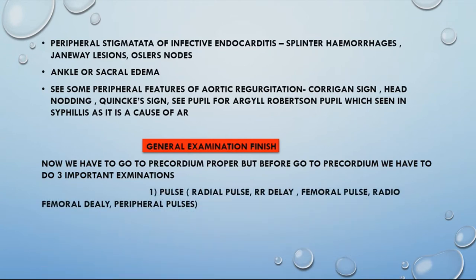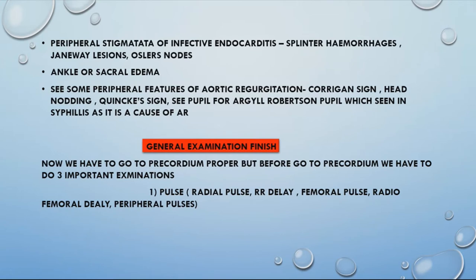The first important examination is the pulse. Check the radial pulse and comment on rate, rhythm, and character. Then check for radio-radial delay by palpating both radial pulses together. Next, check the femoral pulse and assess for radio-femoral delay by palpating radial and femoral pulses together. Also check peripheral pulses: anterior tibialis, posterior tibialis, and dorsalis pedis.